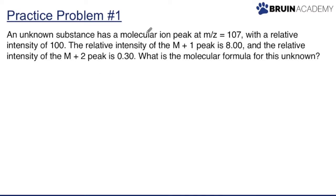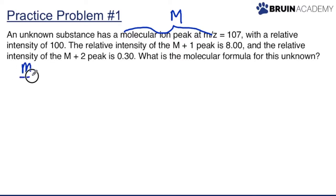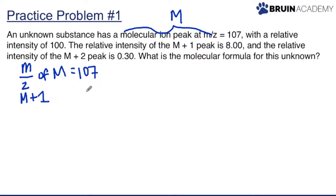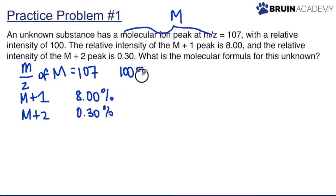The first thing you should do is take a look at the information provided and figure out what is important. We know we have a molecular ion peak at m/z equal to 107. The M+1 relative abundance is equal to 8%, the M relative intensity is 100%, and the M+2 relative intensity is 0.3%.